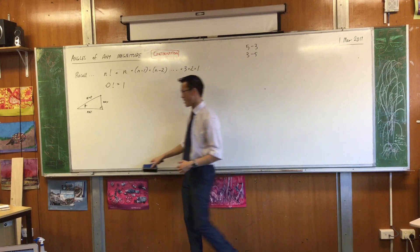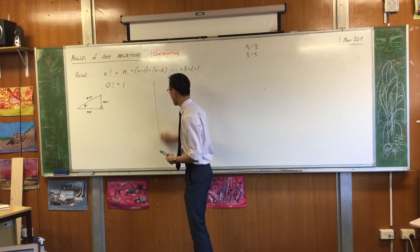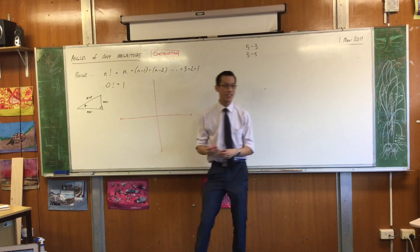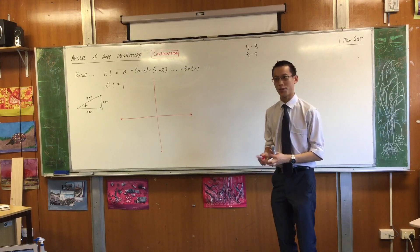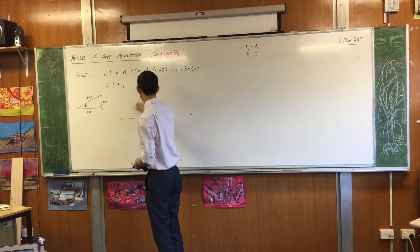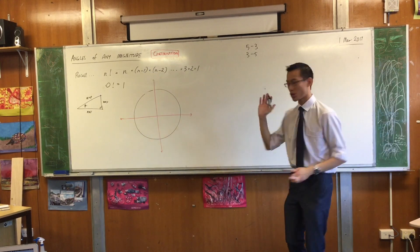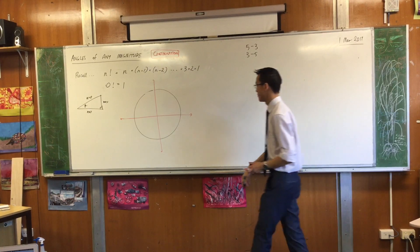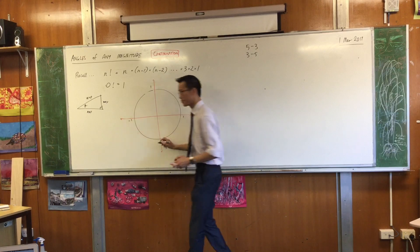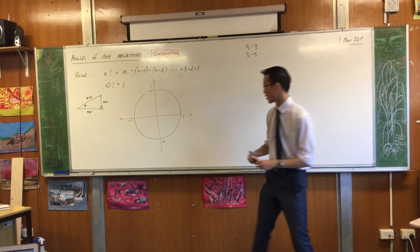So that's what angles of any magnitude means, right? Not just limited, not just restricted to acute angles, but being able to look at any angle we like. So we introduced a shape, and I reintroduced it to you yesterday. Do you remember? And you need to draw this with me. If you have a set of axes on the Cartesian plane, and if you draw yourself a nice big circle.